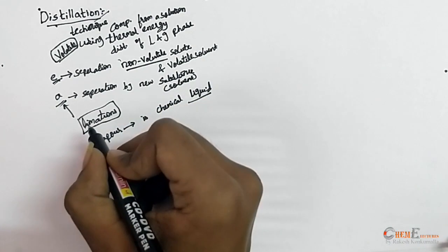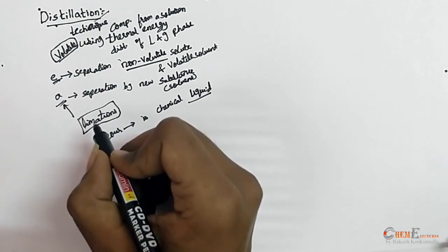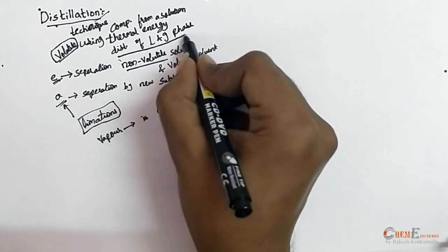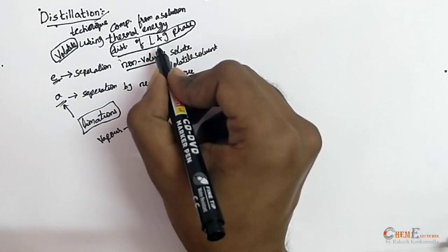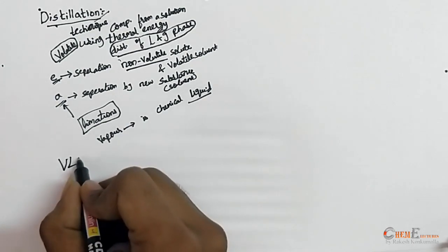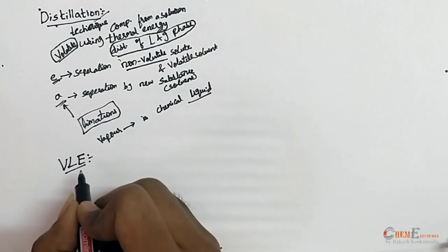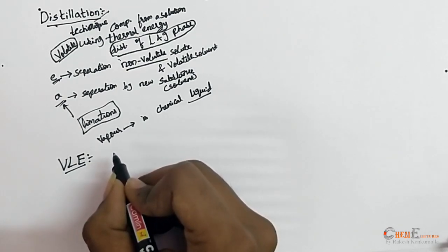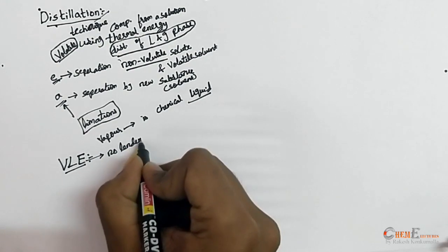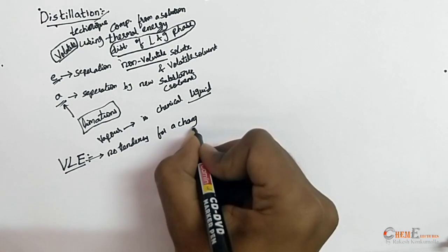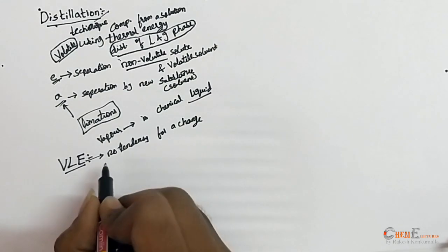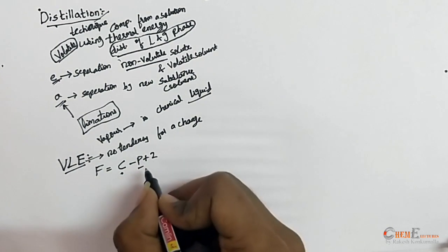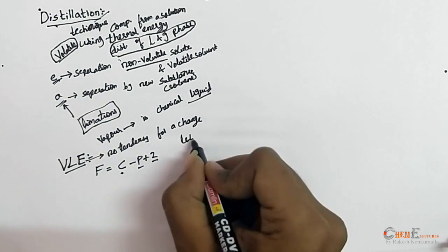To proceed with distillation problems, we need basic data formed from the distribution of liquid and gaseous phases. To understand this, we need to know about vapor-liquid equilibrium (VLE), which is the condition attained when there is no tendency for change in the process. The degrees of freedom F equals C minus P plus 2, where C is the number of components and P the number of phases.